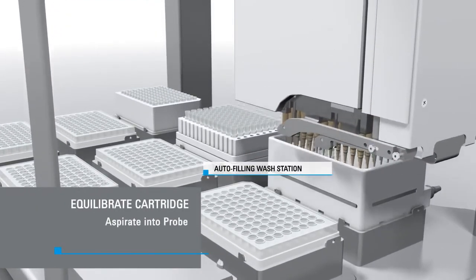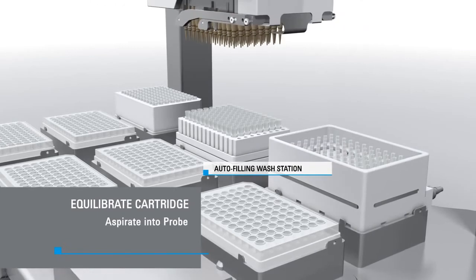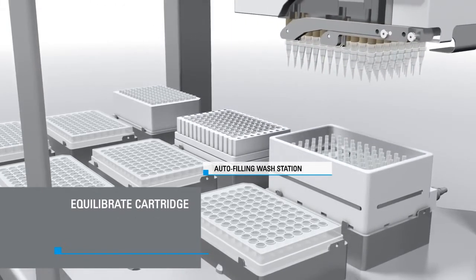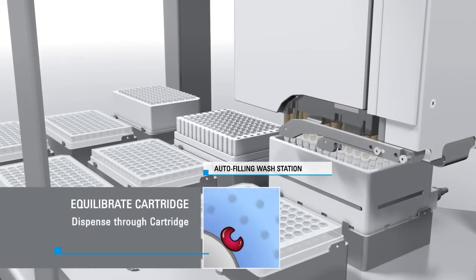First, the cartridges are equilibrated by aspirating buffer from the wash station into the syringe probes. The AssayMap protein A cartridges are mounted on the probe and the buffer is dispensed into the cartridge.